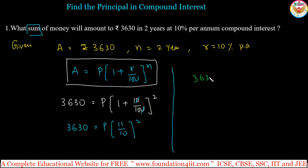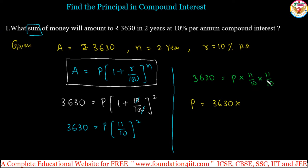So 3630 equals P into (11 by 10) whole squared, that is 11 by 10 into 11 by 10. To find the value of P, we take 3630 and bring the fraction to the other side as its reciprocal: multiply by 10 by 11 into 10 by 11. Now we cancel using the 11 table.